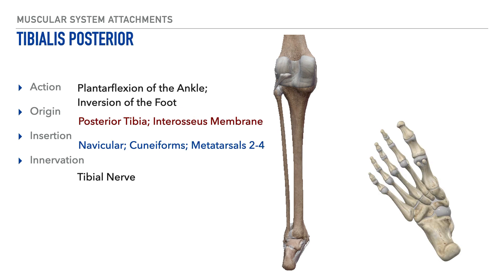Next is the tibialis posterior. Its action is plantar flexion of the ankle along with inversion of the foot. Its origin is the posterior tibia and the interosseous membrane. Its insertion is on multiple points of the foot, including the navicular, cuneiforms — specifically the medial, intermediate, and lateral cuneiforms — and metatarsals 2 through 4. Its innervation is the tibial nerve.